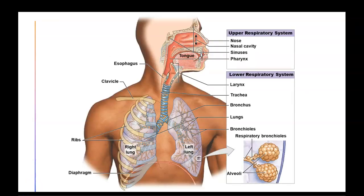Looking at a diagram of the upper respiratory system: air enters through the nose and nasal passage into the nasal cavity. Inside you can see the nasal concha, which are scroll-like divisions that increase surface area.